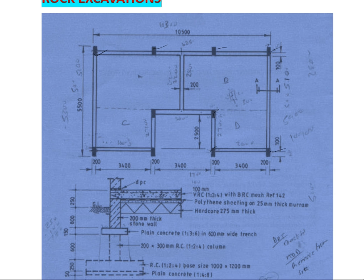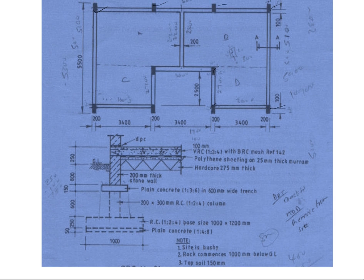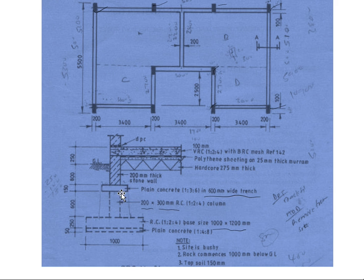This is our Section A-A. The column base size is 1000 by 1200 millimeters, we have plain concrete, and the column size is 200 by 300 RC column. At ground level we have a strip foundation that is 600 millimeters wide trench, and then the 200 millimeter brick stone wall going up.